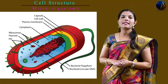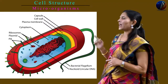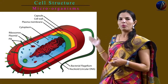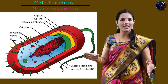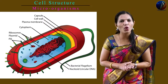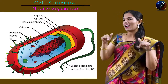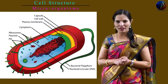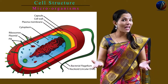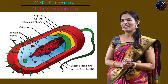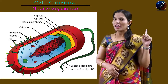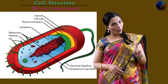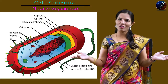In the exam, you will 100% get a diagram question, so you have to think about this diagram. This is a prokaryotic cell — it does not have a well-defined nucleus. Please observe this carefully and be prepared with the diagram. So to summarize: some microorganisms are unicellular, some are multicellular, and they can have prokaryotic or eukaryotic cells. I think all of you are clear on these two things.